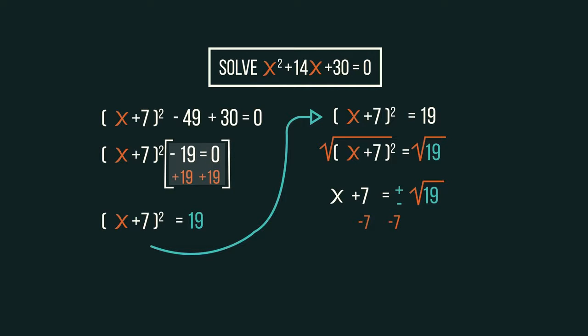We're nearly there with the solving. Subtract 7 from both sides and we get x equals negative 7 plus or minus square root 19. And we have our two answers.